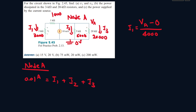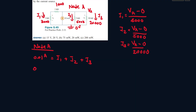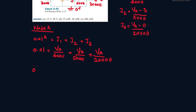So i2 will be Va minus zero over 5000 ohms, and i3 will be Va minus zero over 20000 ohms. Substituting into the KCL equation gives Va over 4000 plus Va over 5000 plus Va over 20000 equals 0.01. Factoring out Va, we get Va times (1/4000 + 1/5000 + 1/20000).